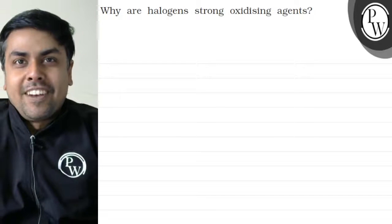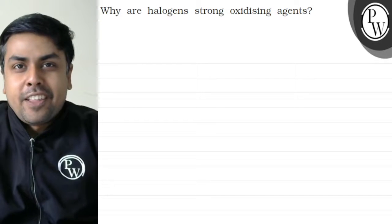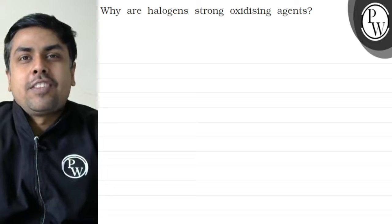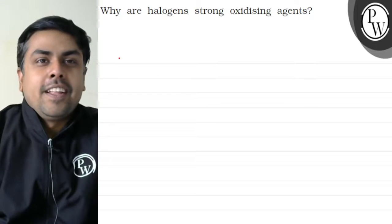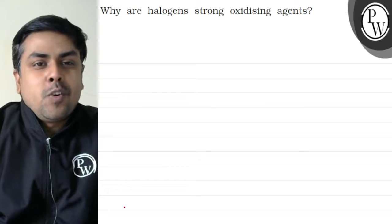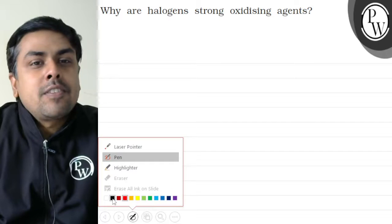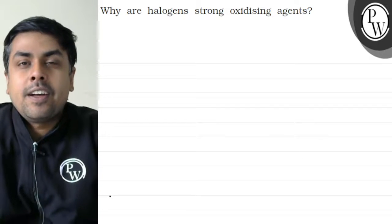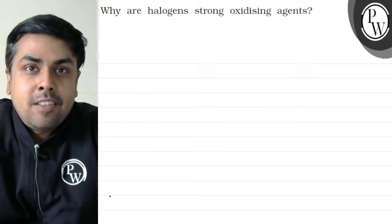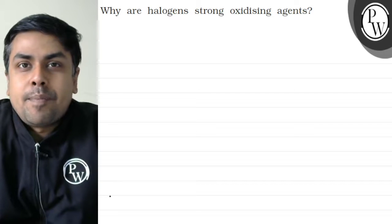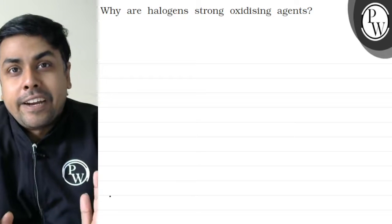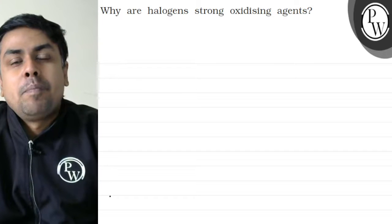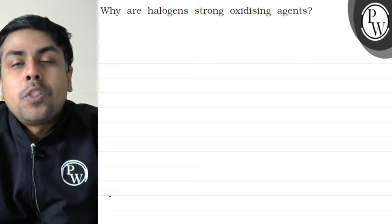Let's read the question: why are halogens strong oxidizing agents? We know that halogens in general have a tendency to accept electrons to form halide ions, and if they are going to accept electrons they will get reduced and they will act as an oxidizing agent. But why do they have a tendency to accept electrons?